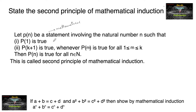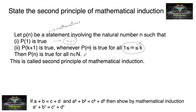This principle states that for any mathematical statement, first if we can prove it for n = 1, then assume that for some k, the statement is true for every number m with 1 ≤ m ≤ k. Then we have to prove P(k+1), and then we can say that the statement is true for every natural number.